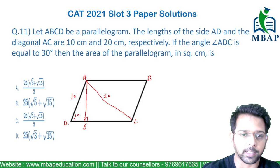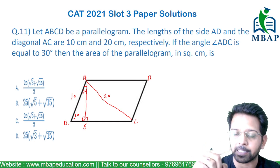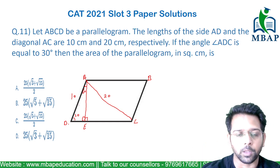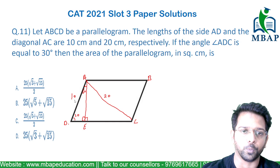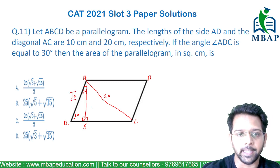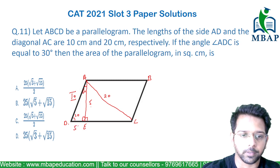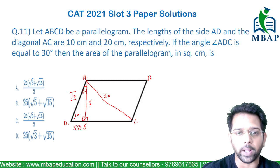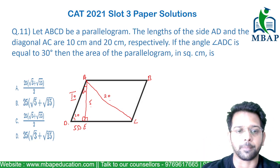Since angle ADC is 30 degrees and angle AED is 90 degrees, this remaining angle will certainly be 60 degrees. So triangle ADE becomes a 30-60-90 triangle, and we know the sides of a 30-60-90 triangle are in the ratio 1 : √3 : 2. So if AD is 10, AE will be half of 10 which is 5, and the side opposite to 60° will be 5√3. So the small section DE comes out to be 5√3.